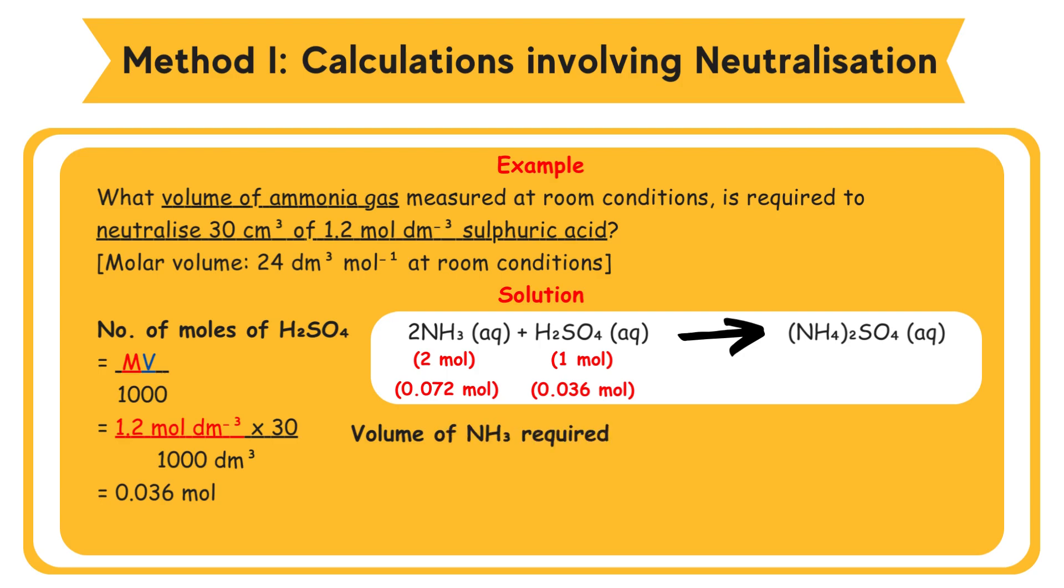Volume of NH3 required = number of moles of NH3 × molar volume NH3 at room conditions = 0.072 mol × 24 dm³/mol = 1.73 dm³.